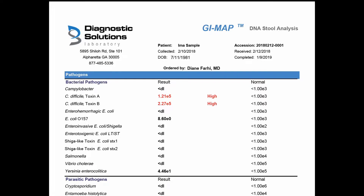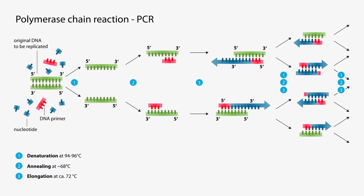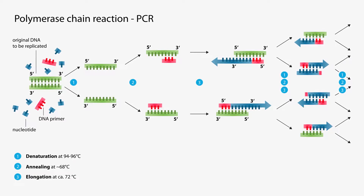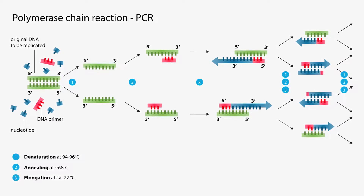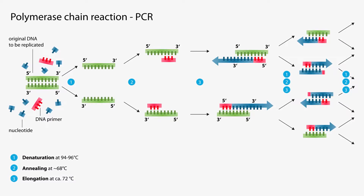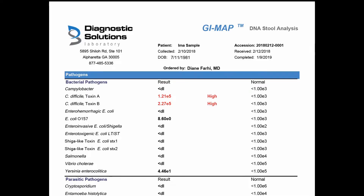Before we get into the details of this sample test result, let me give you a little background information on how the lab determines all of these values from your sample. You're going to submit a stool sample to the lab and through a process called polymerase chain reaction, or PCR, they're able to detect the DNA in your sample, amplify it, and from that they can see all the different species in your stool sample in real time. So this is a snapshot of all the organisms at that time.